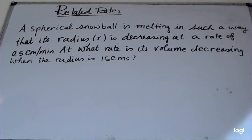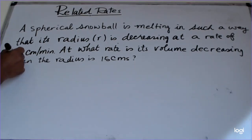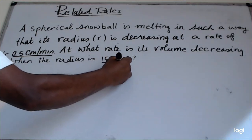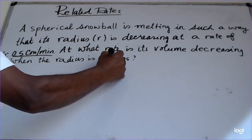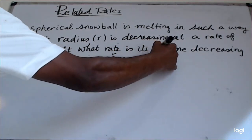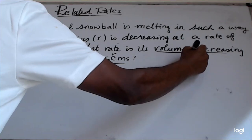In related rates we have two or more quantities that change per time. In this particular case we have a spherical snowball where, if it is hot, it will reduce its volume because its radius is decreasing and the volume is a function of the radius. So we are given that dr/dt is 0.5 cm per minute, and the radius r is 15 cm. The unknown, or we call it the required, is dV/dt.